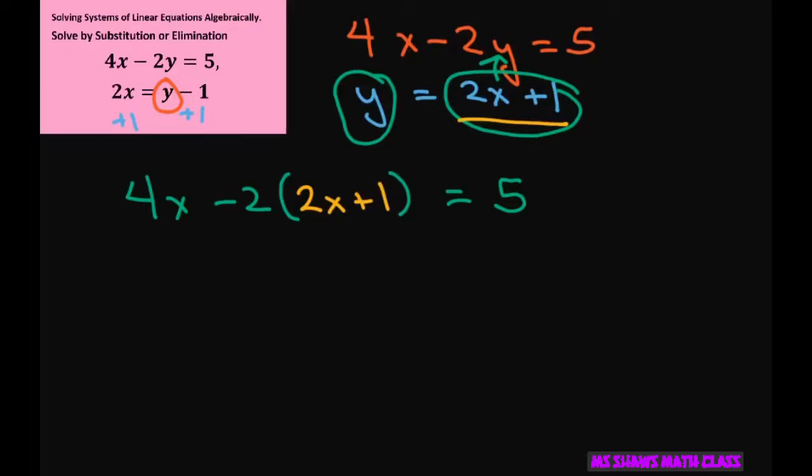And that means we only have x's and we can solve for x. So we get 4x, don't forget to distribute here. Minus 4x minus 2 equals 5.